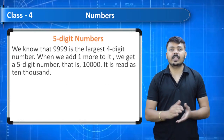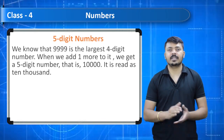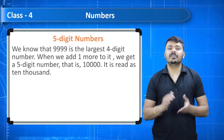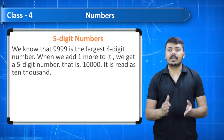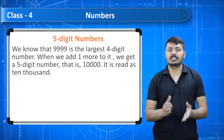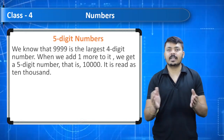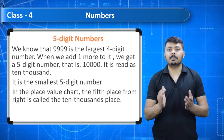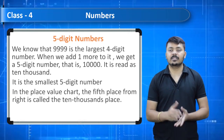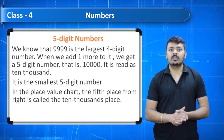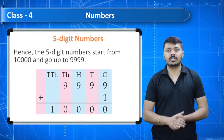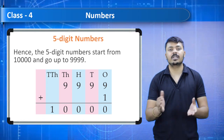Five-digit numbers: we know that 9,999 is the largest four-digit number. When we add one more to it we get a five-digit number — 10,000, read as ten thousand. It is the smallest five-digit number. In the place value chart, the fifth place from the right is called the ten thousands place. Hence, five-digit numbers start from 10,000 and go up to 99,999.